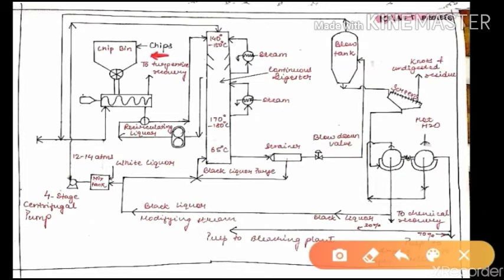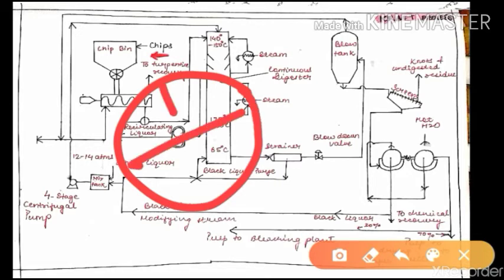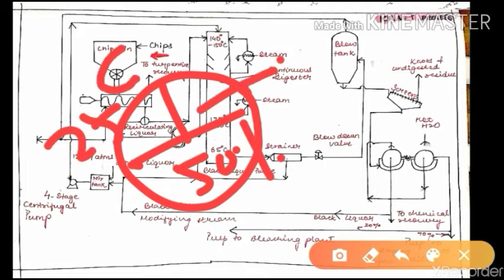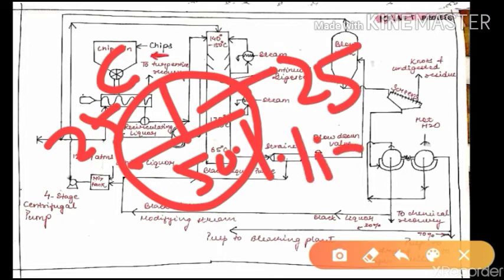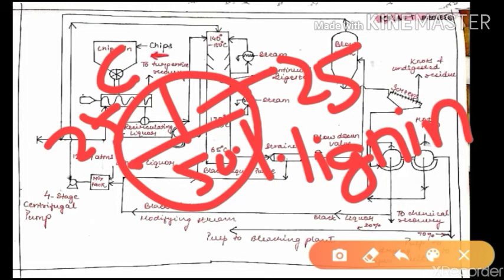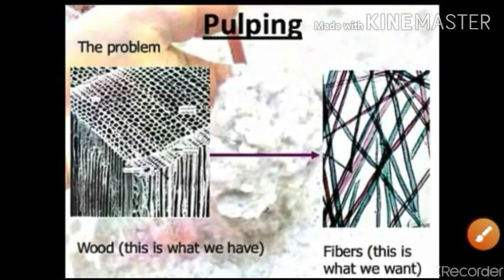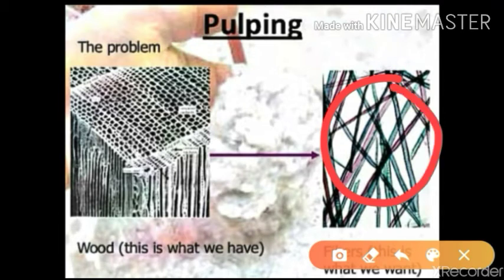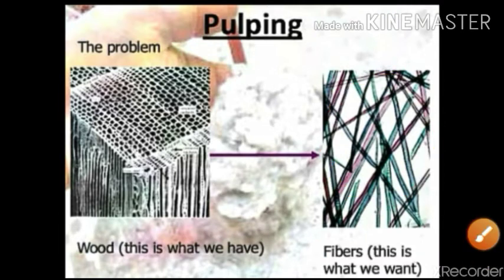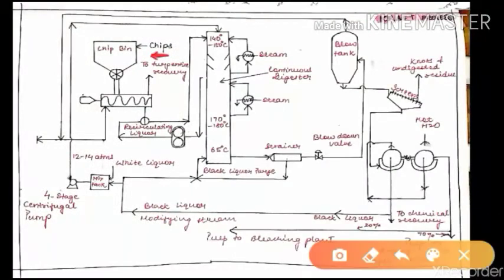Let me explain the composition of the wood chip. We have 50% water in the wood chip, 25% is cellulose, and 25% is lignin. Lignin is nothing but natural glue that holds the wood fibers together. Wood exists as a solid, but we require individual fibers. This is achieved with the help of a cooking chemical inside the large pressure cooker — the digester.